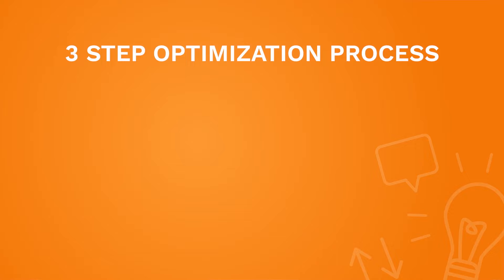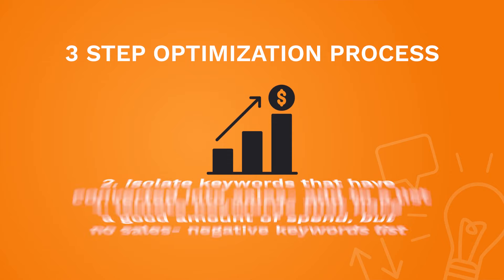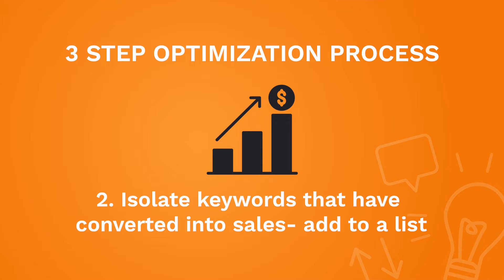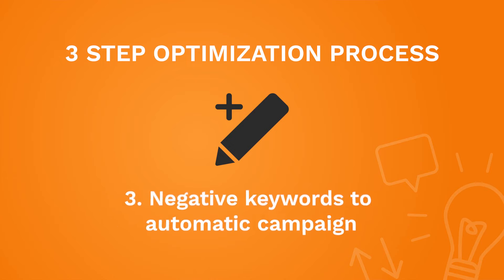When we're in the search term report, we have a three-step optimization process. The first step is to isolate keywords that we've spent a good amount of money on but have not converted into sales, then add those to our negative keywords list. The second step is to isolate keywords that have converted into profitable sales, then add those to our keyword list. The third step is to add all those new keywords to each of our manual campaigns, and add all negative keywords into the automatic campaign.